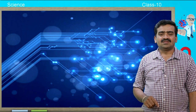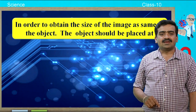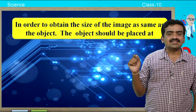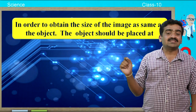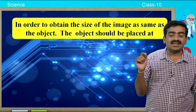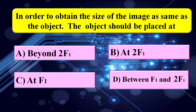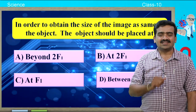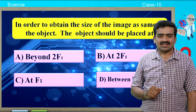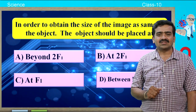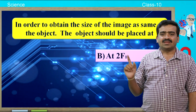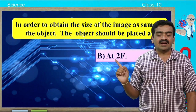Here is the second question: in order to obtain an image the same size as the object, the object should be placed at — a) beyond 2F1, b) at 2F1, c) at F1, d) between F1 and F2. The answer is b) at 2F1.